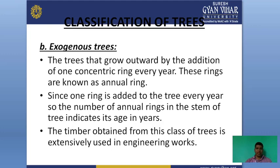Exogenous trees are those that grow in the outward direction by the addition of one concentric ring every year. These rings are known as annual rings. Since one ring is added every year, the number of annual rings in the stem of a tree indicates its age in years. The timber obtained from this class of trees is extensively used in engineering work.